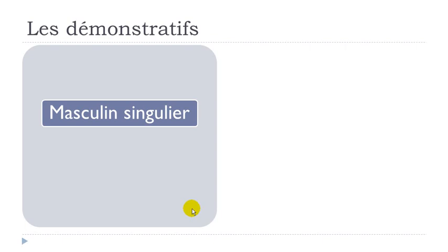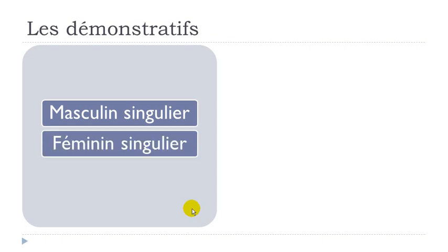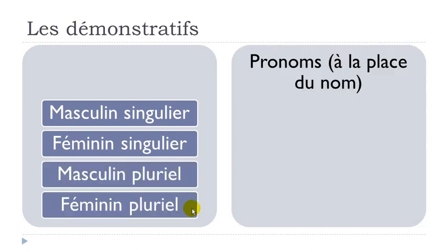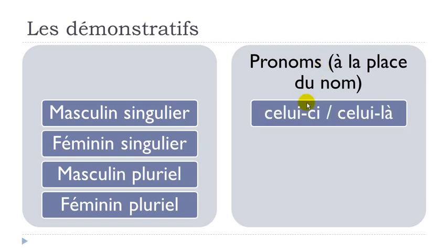We'll see the pronouns now. You use these pronouns instead of the noun. For the masculine form, we have 'celui-ci' and 'celui-là'. In English, it would be translated as 'this one'. In French it's a bit more tricky because we have 'celui' and then 'ci' or 'là'. 'Ci' comes first for the nearest, 'là' comes next. 'Celui-ci', 'celui-là' — this one.